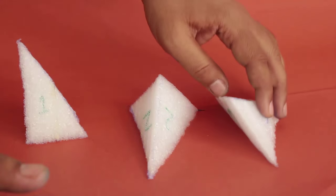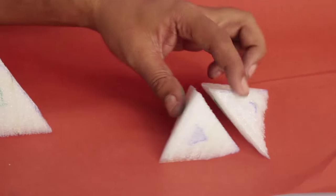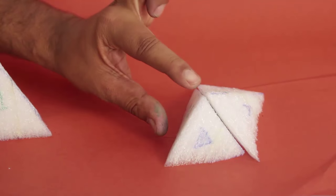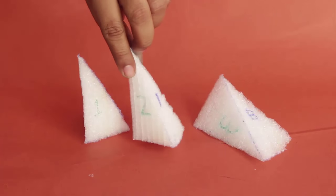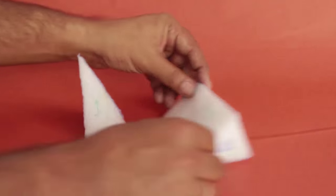So all three pyramids have the same volume and we can join them to make a triangular prism. Hence we can prove that the volume of the pyramid is one-third the volume of a prism.